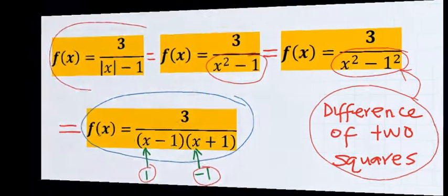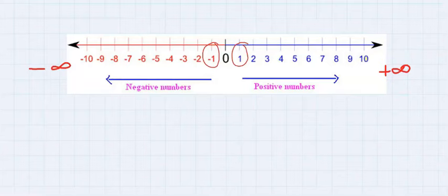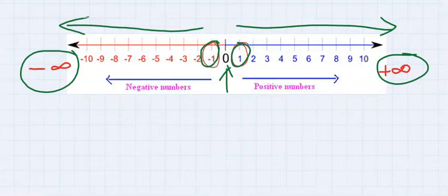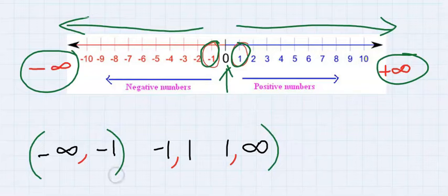This means whenever x is equal to one or x is equal to minus one, this function will cease to exist, which is the same as this function. From the number line, whenever x is equal to minus one or x is equal to one, the function will terminate. However, all numbers going towards negative infinity and towards positive infinity — including zero — are allowed, except minus one and one. Mathematically, our answer will be represented as all real numbers towards negative infinity and positive infinity, except minus one and one.